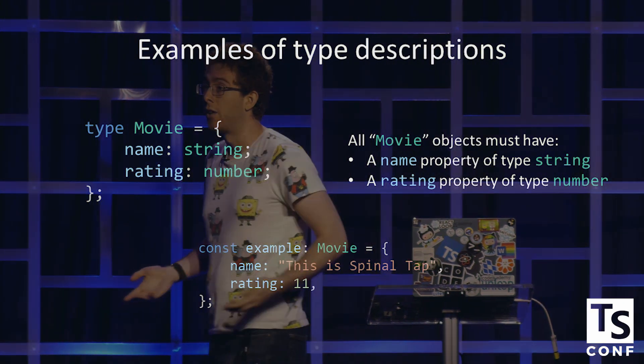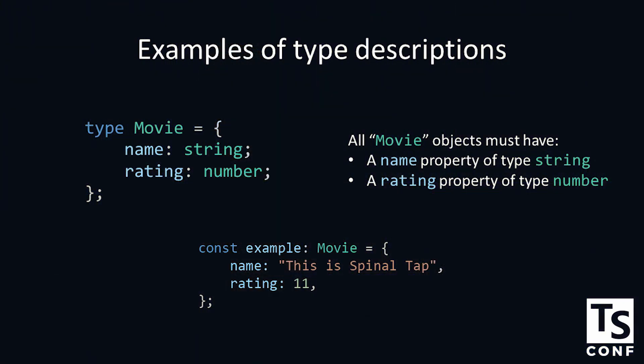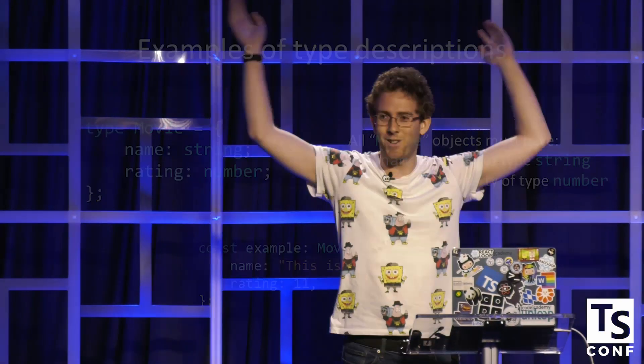As an example, you might declare a movie type, which says all movie objects have a name of type string and a rating of type number. Later on, you might make a variable called example, which is really two language constructs here. In the JavaScript side, we create this example variable. And in the TypeScript side, we declare it's going to be type movie. Both of them are coming together to say there's a variable of type movie and these are the things on it. TypeScript's happy because you've successfully set up your fields. Good for you. Nice job, TS Conf.